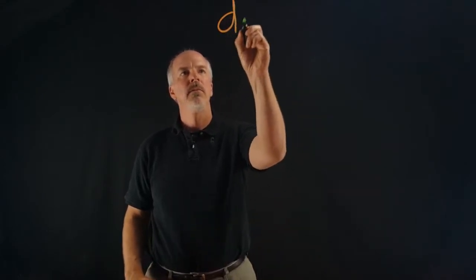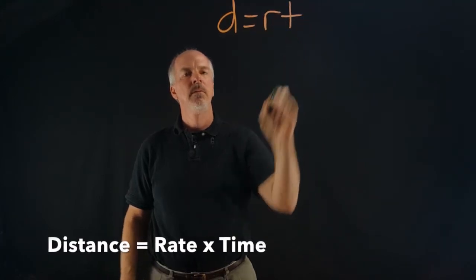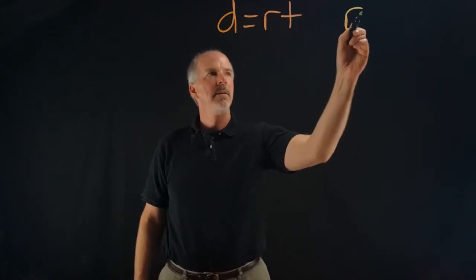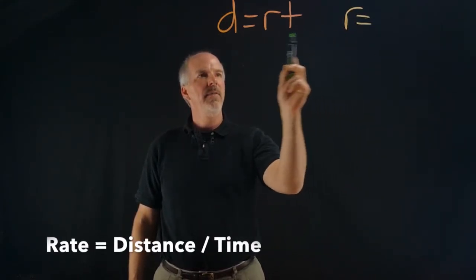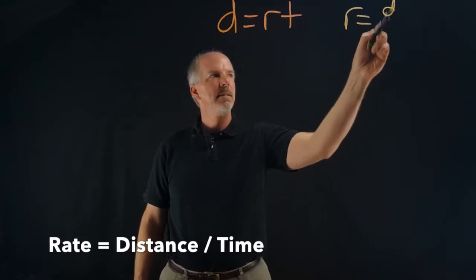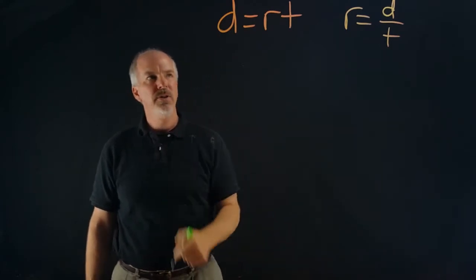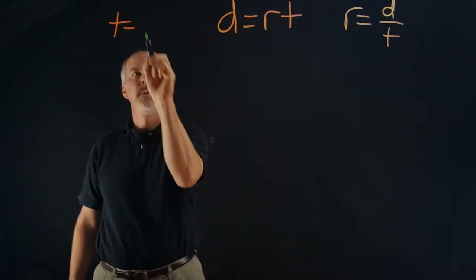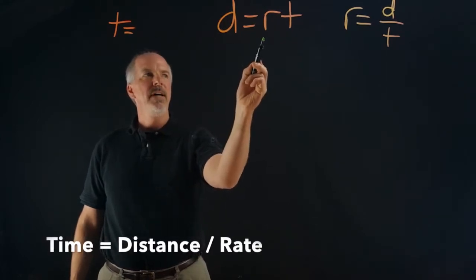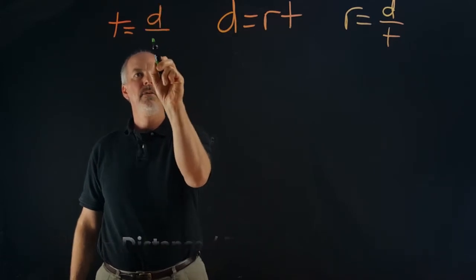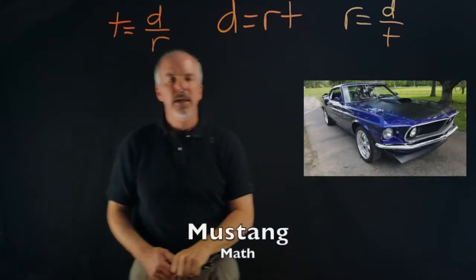In this video we're talking about distance. Distance equals rate times time. We're also going to be talking about rate — to get rate, if we divide both sides by time, we get distance over time equals rate. We'll also be trying to find time: if we divide both sides by rate, we get distance over rate equals time.